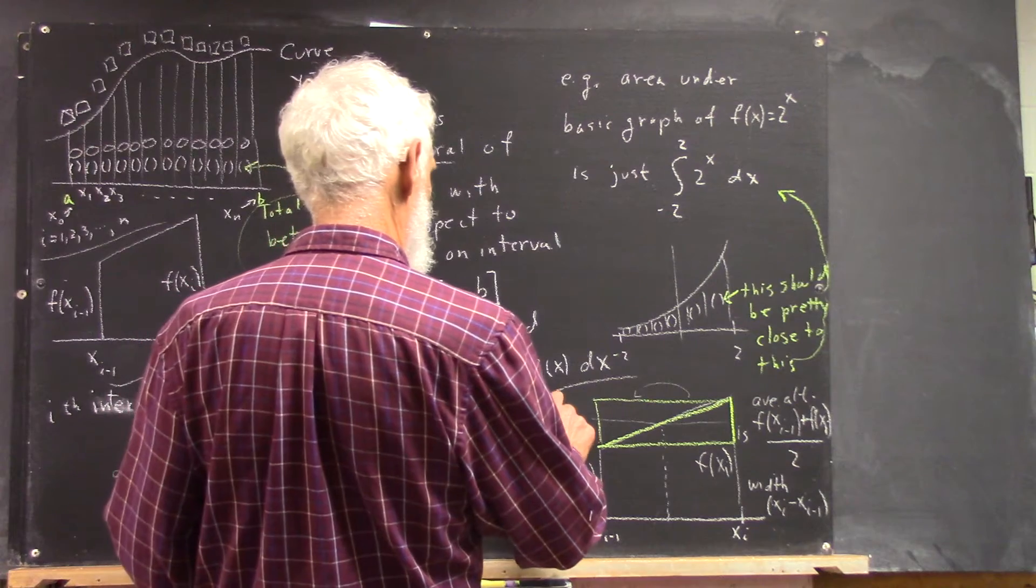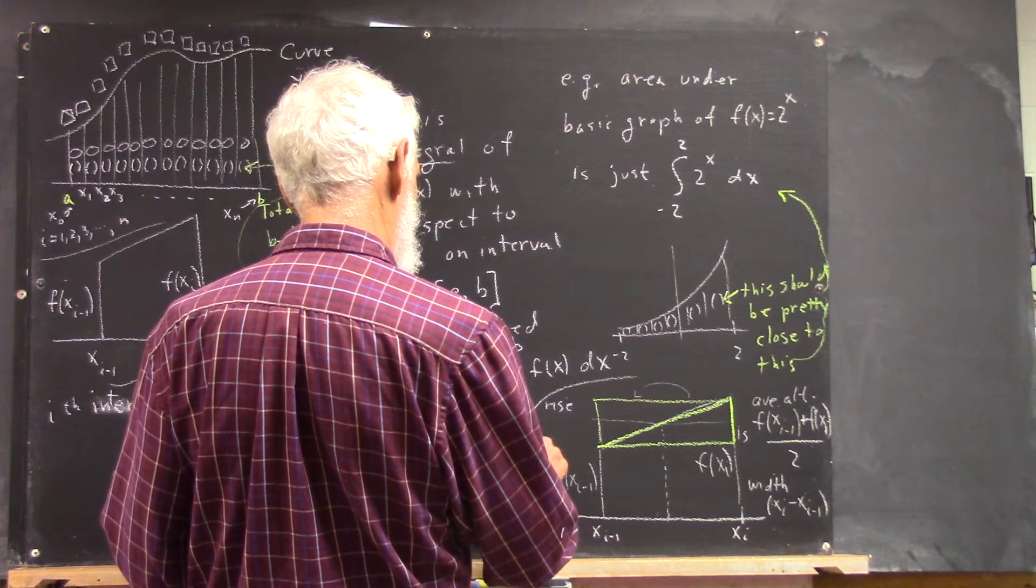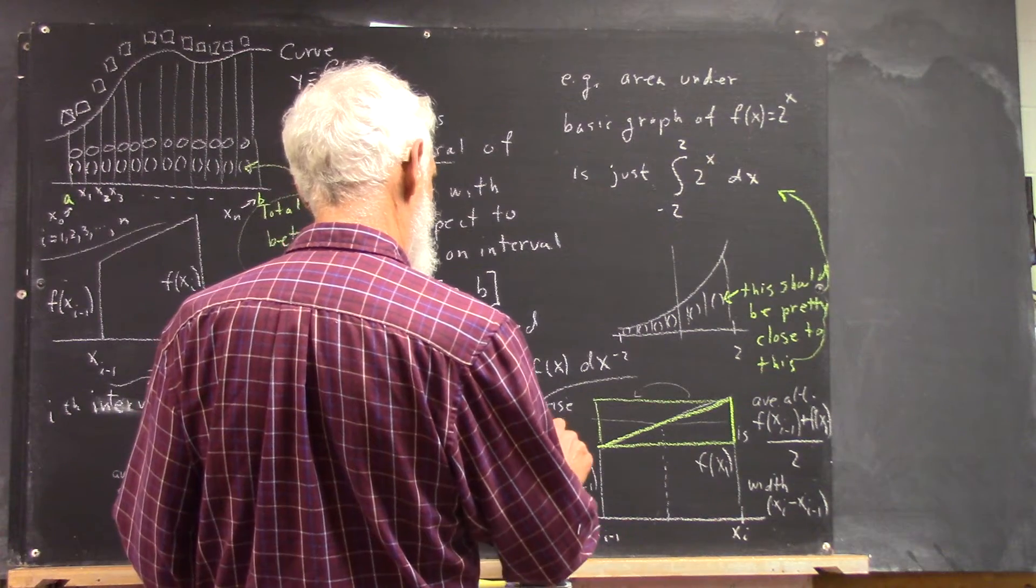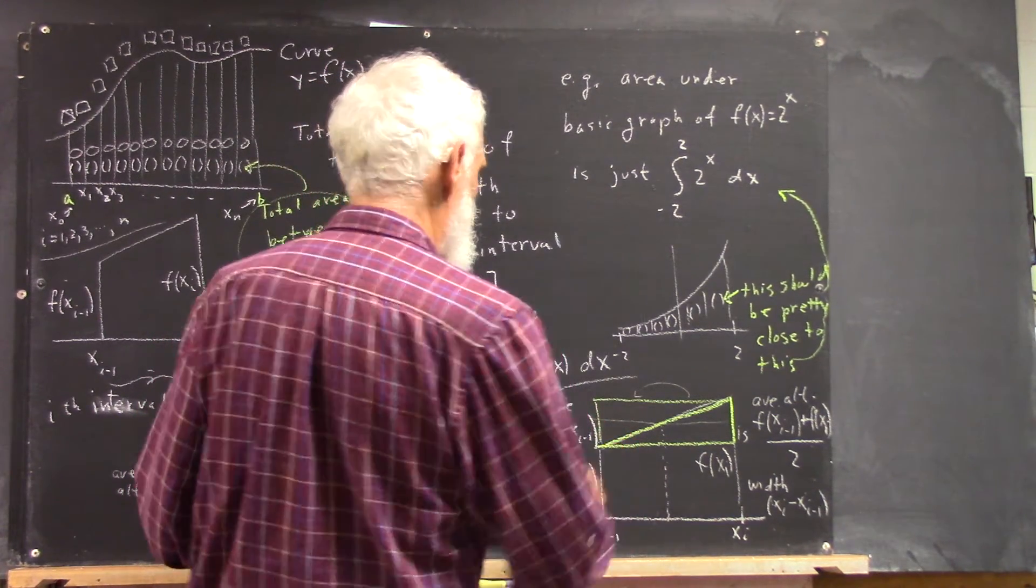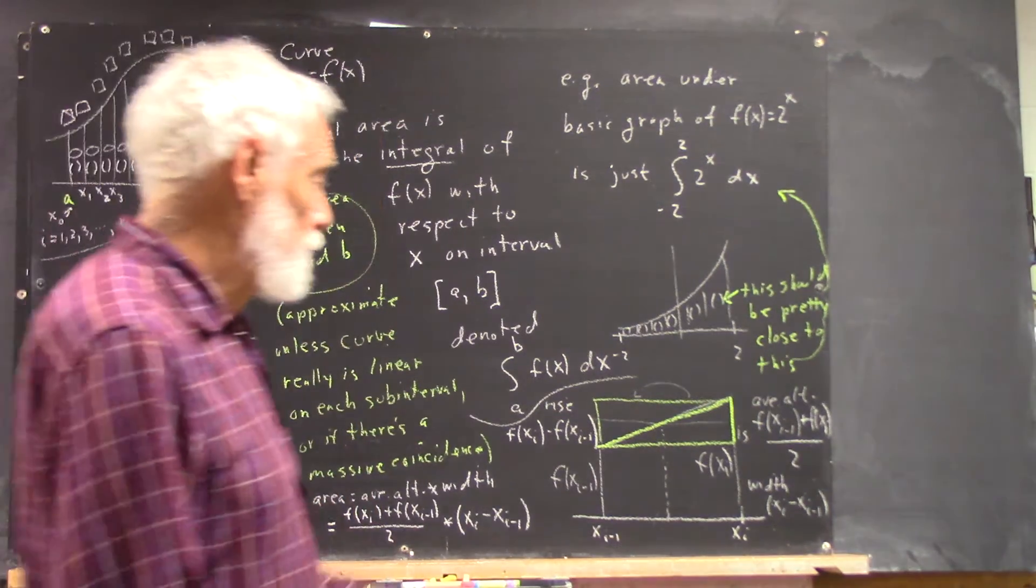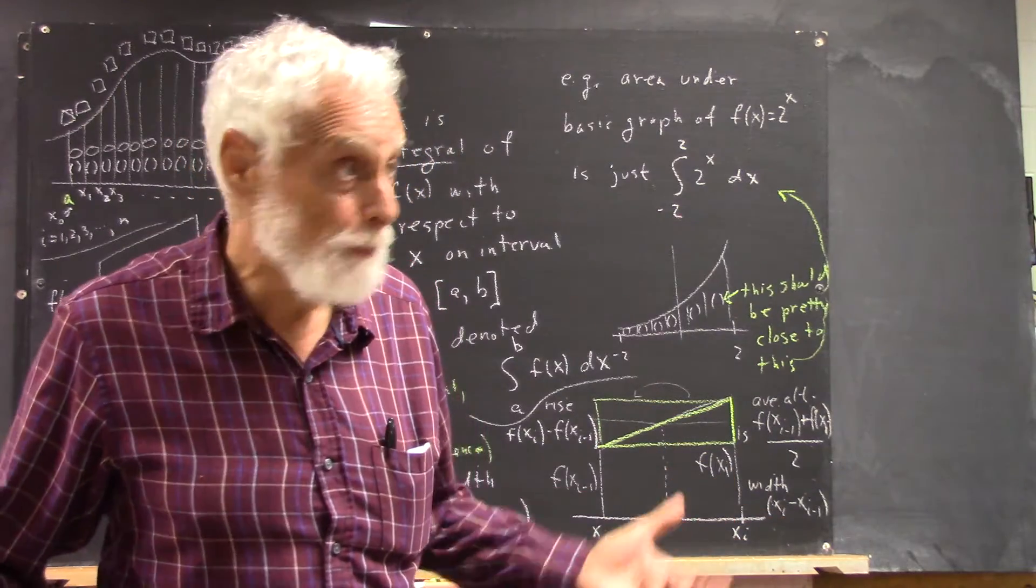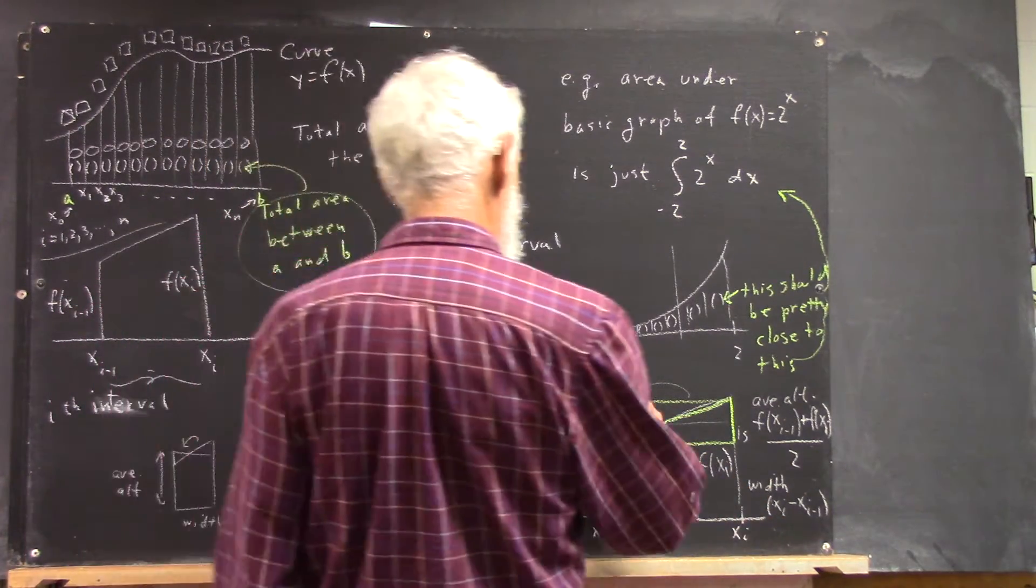So, the rise is F of XI minus F of XI minus 1. Because what do you do? You subtract this from this. That's how you get the rise. Everybody knows that. And the run...